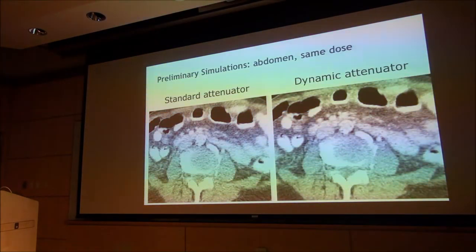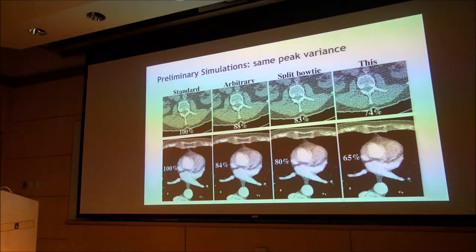Here's a simulation of what the benefits should be. Here's a scan of the lumbar spine at the same dose with a standard bowtie versus a dynamic attenuator. The noise level is lower. If you want to keep the noise level the same and ask how much dose reduction you can get, the percentages you see are the dose for the same peak variance. This is a standard bowtie, this is the piecewise linear dynamic bowtie. 65% the dose, and the noise is more visually appealing because it's less streaky.